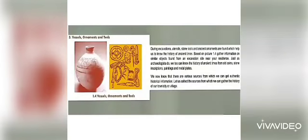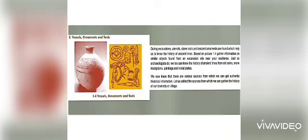The third source of history is vessels, ornaments and tools. During excavations, utensils, stone tools and ancient ornaments are found, which help us to know the history of ancient times. Based on picture 1.4, gather information on similar objects found from an excavation site near your residence.